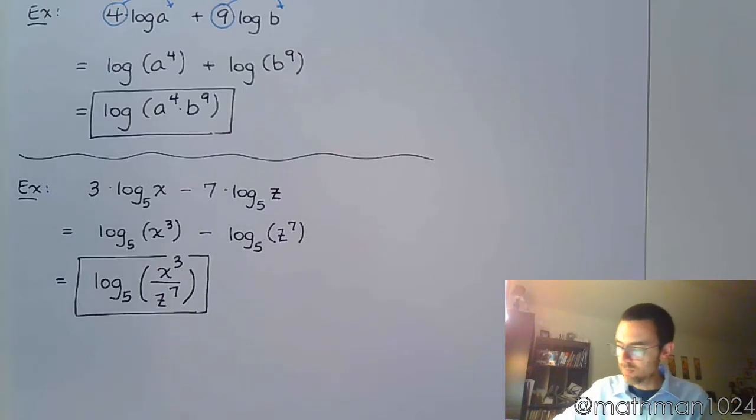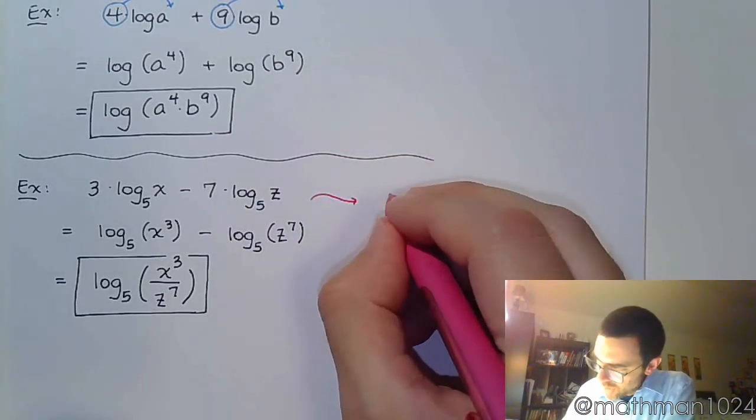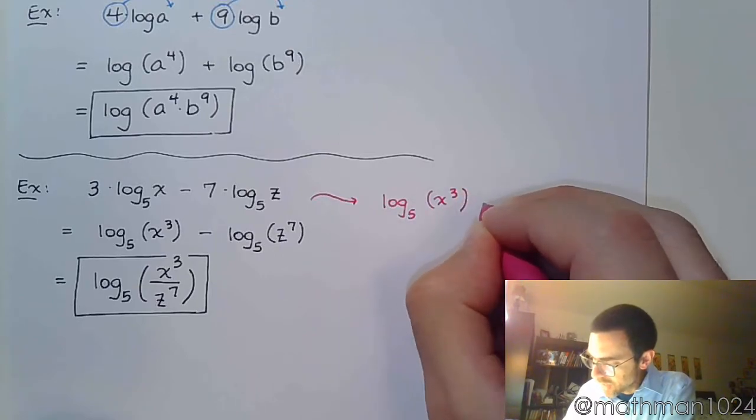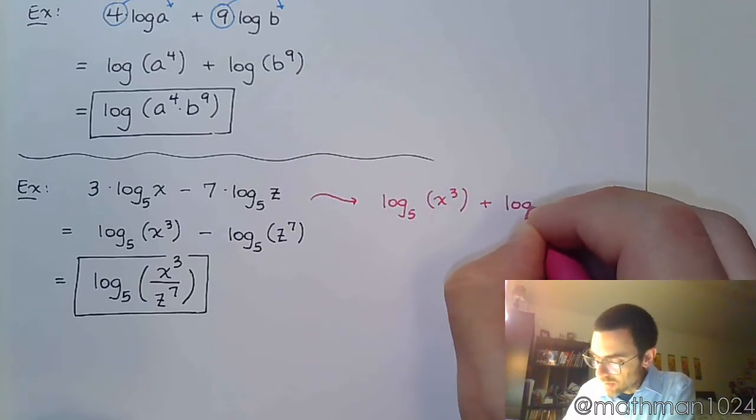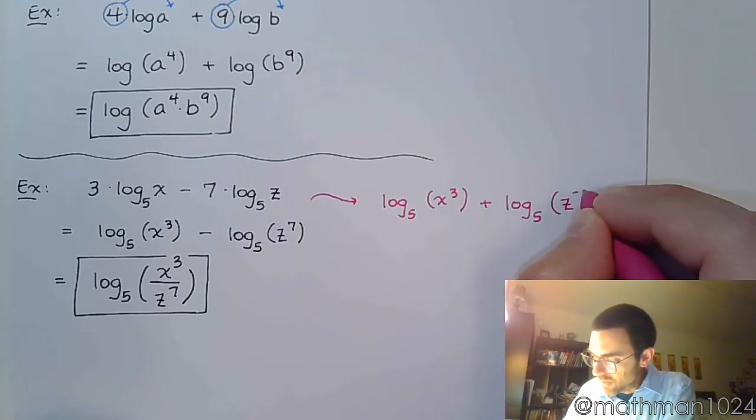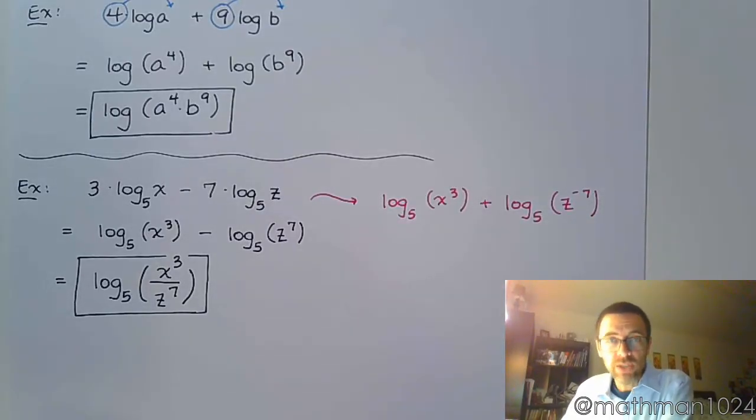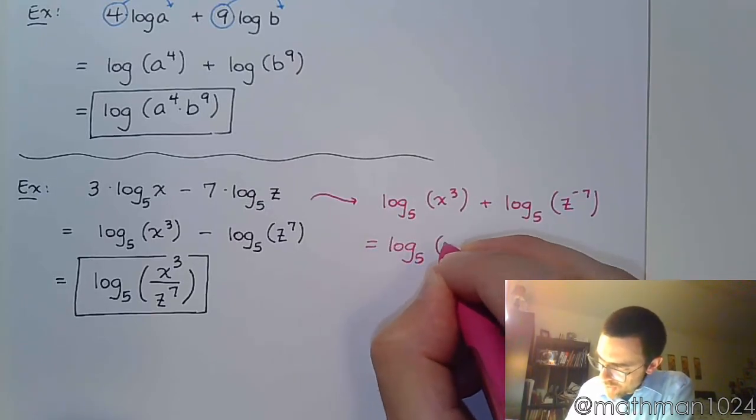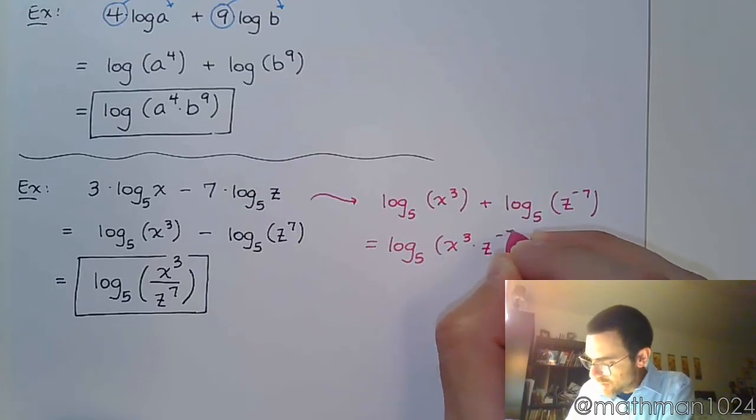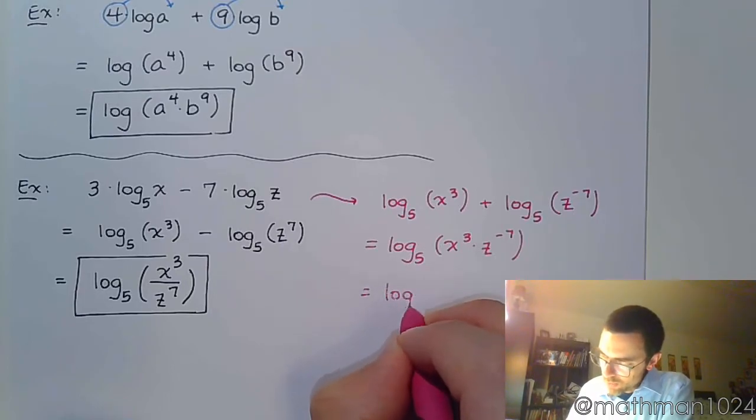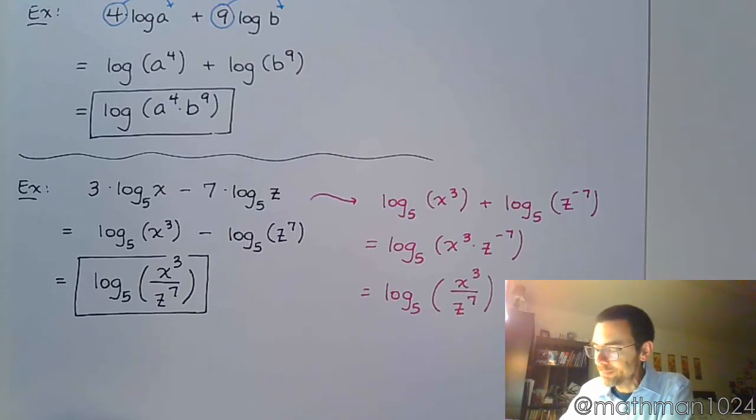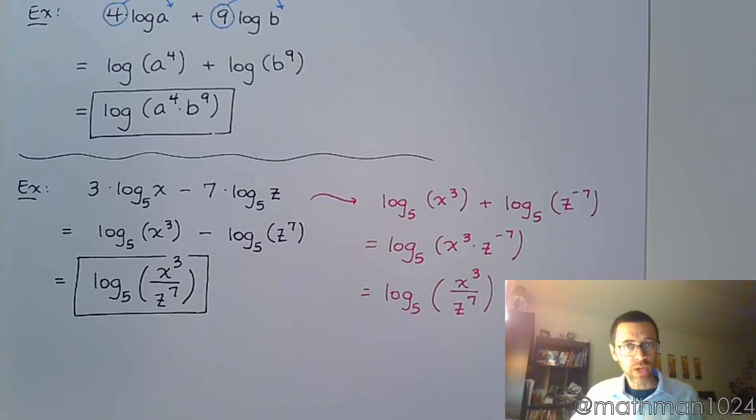Another way to see this is you could say this becomes log base 5 of x to the 3rd plus log base 5 of z to the negative 7th. You could take the negative with it as it goes up into the power. Then when I put these guys together, you get a product of x to the 3rd and z to the negative 7th. But we know that when you have a negative power, that negative power ends up in the denominator. So we get the same answer. It depends on how your brain works and how you want to put that stuff together.